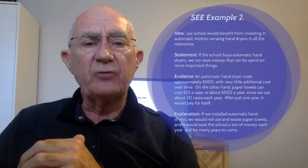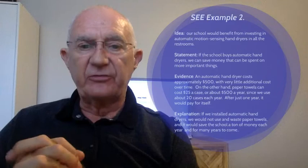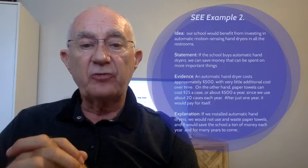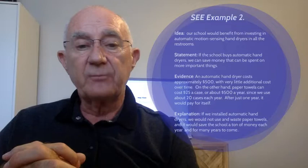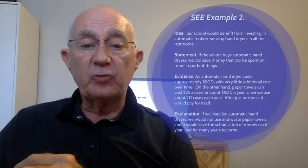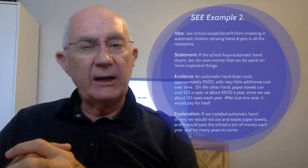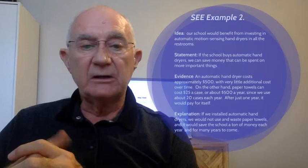The statement: 'If the school buys automatic hand dryers, we can save money that can be spent on more important things.' The evidence: an automatic hand dryer costs approximately five hundred dollars with very little additional cost over time. On the other hand, paper towels can cost twenty-five dollars a case, or about five hundred dollars a year, since the school uses about twenty cases each year in each washroom. So after just one year, it will pay for itself.